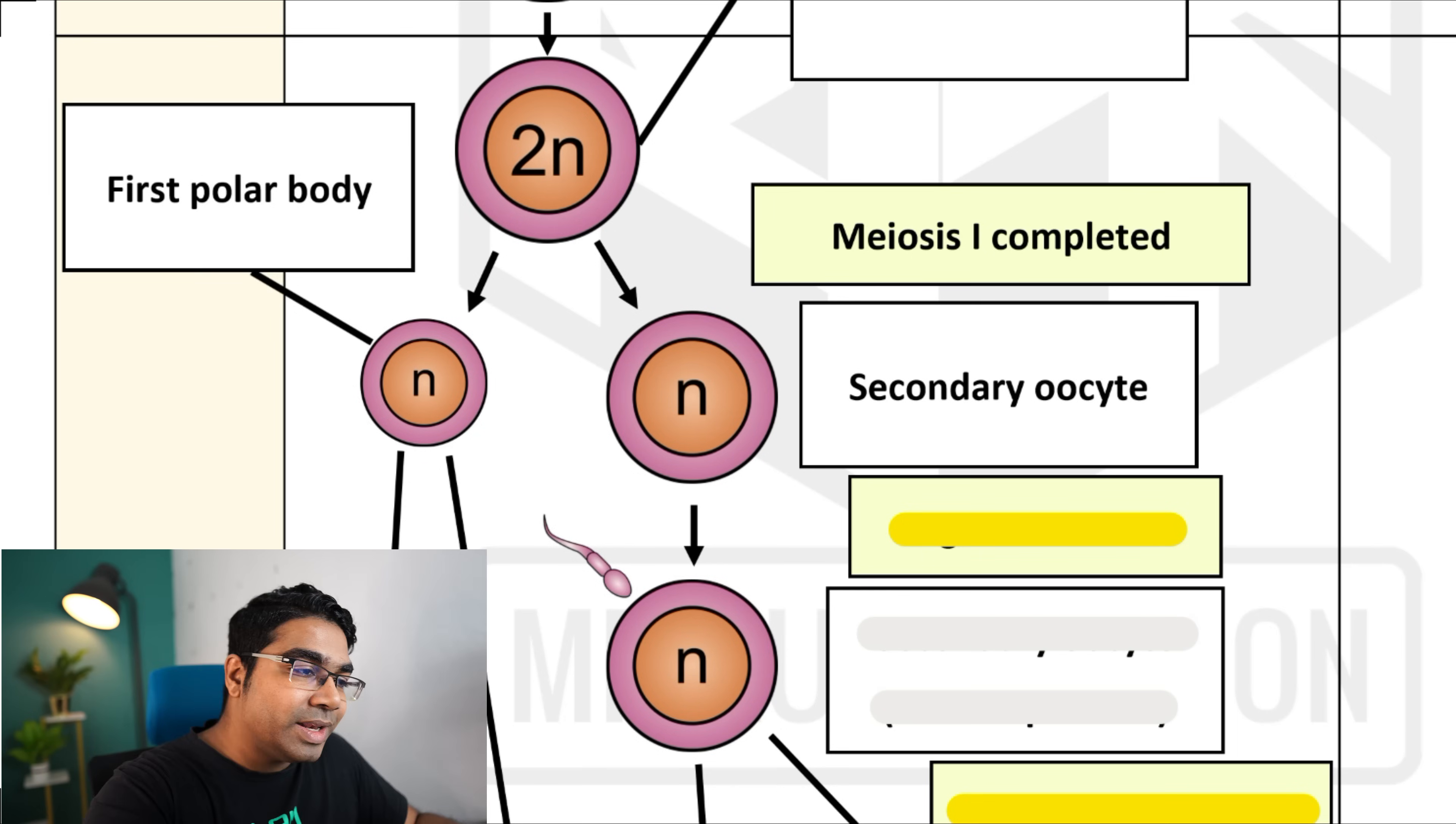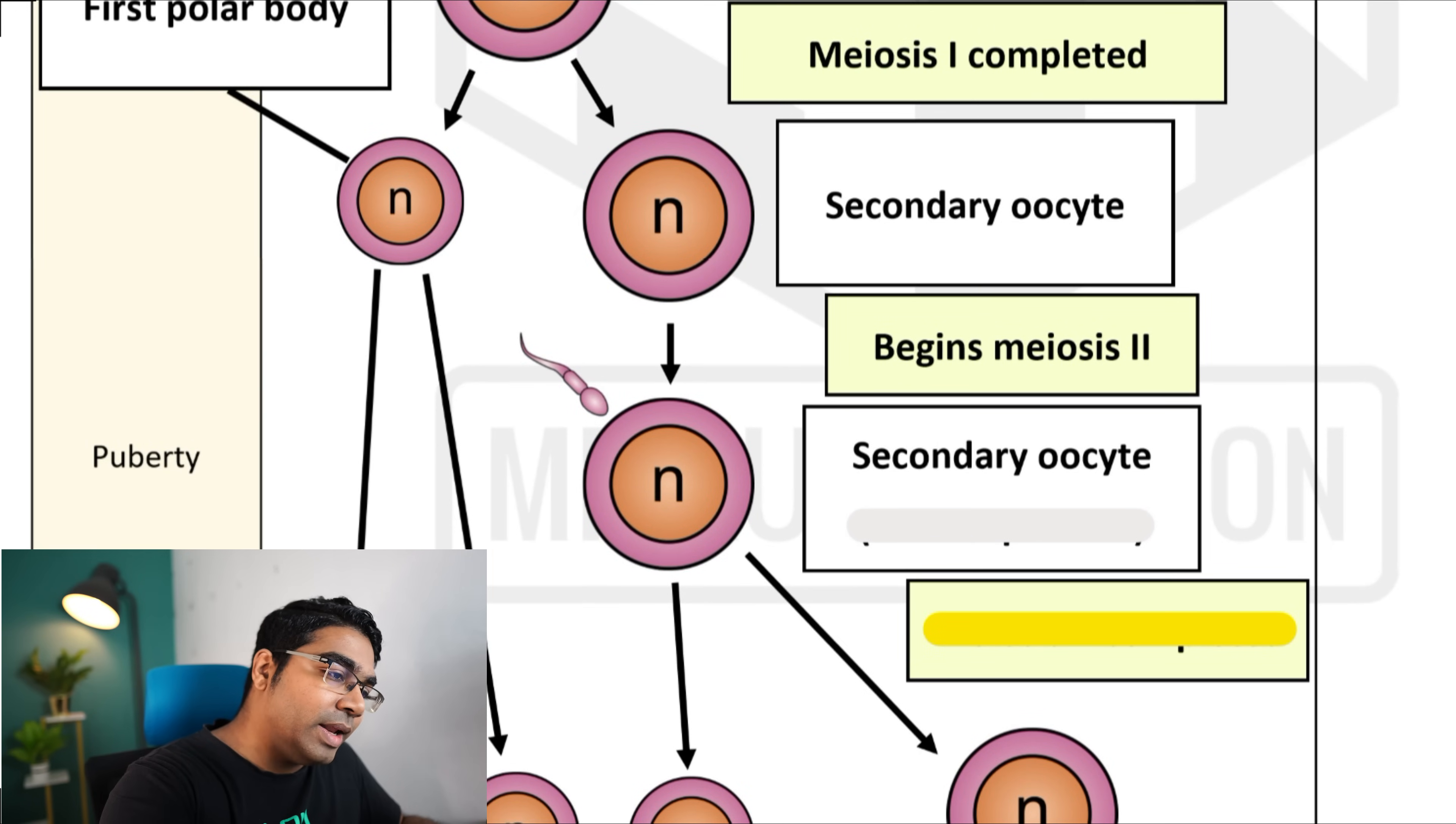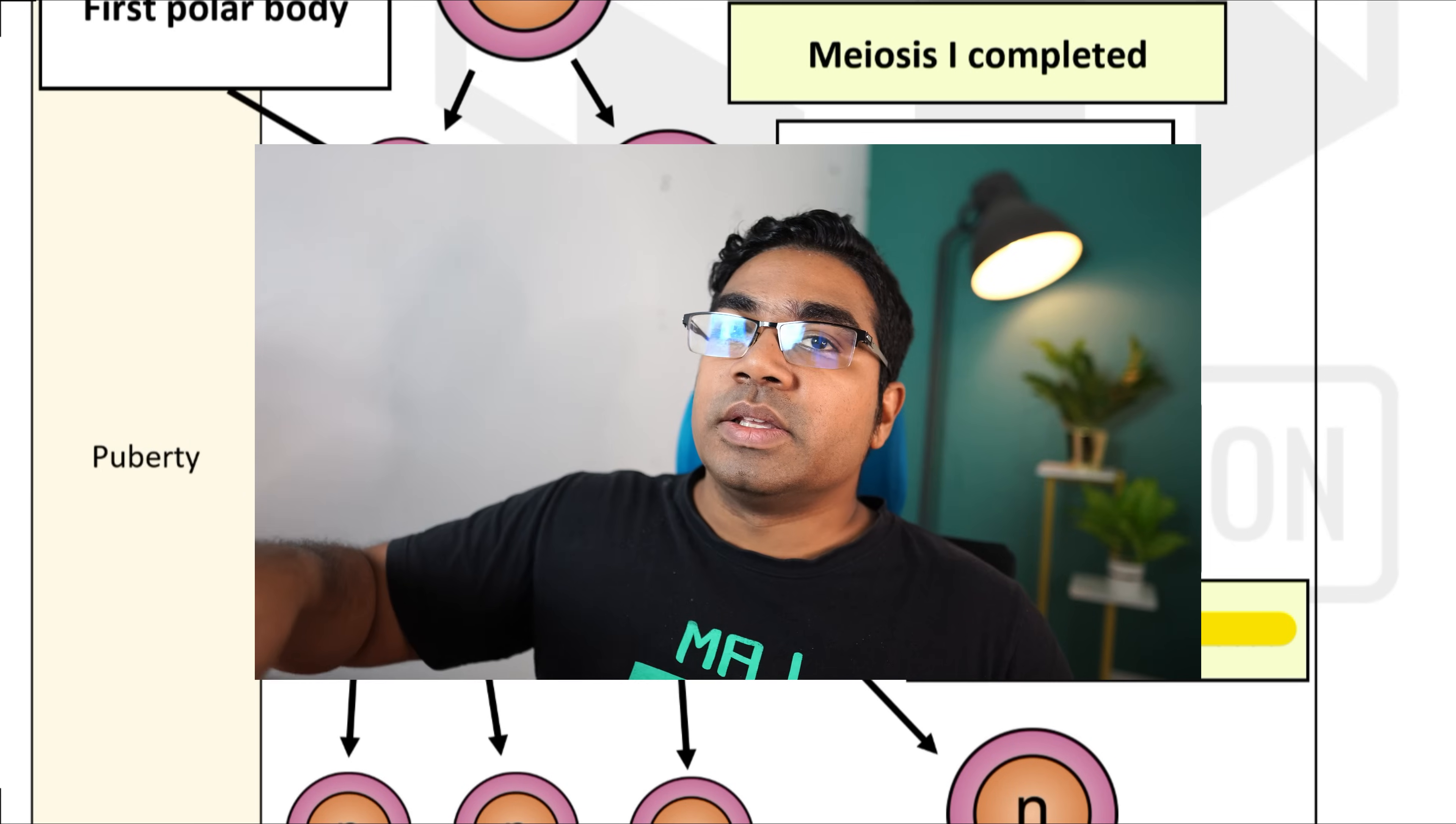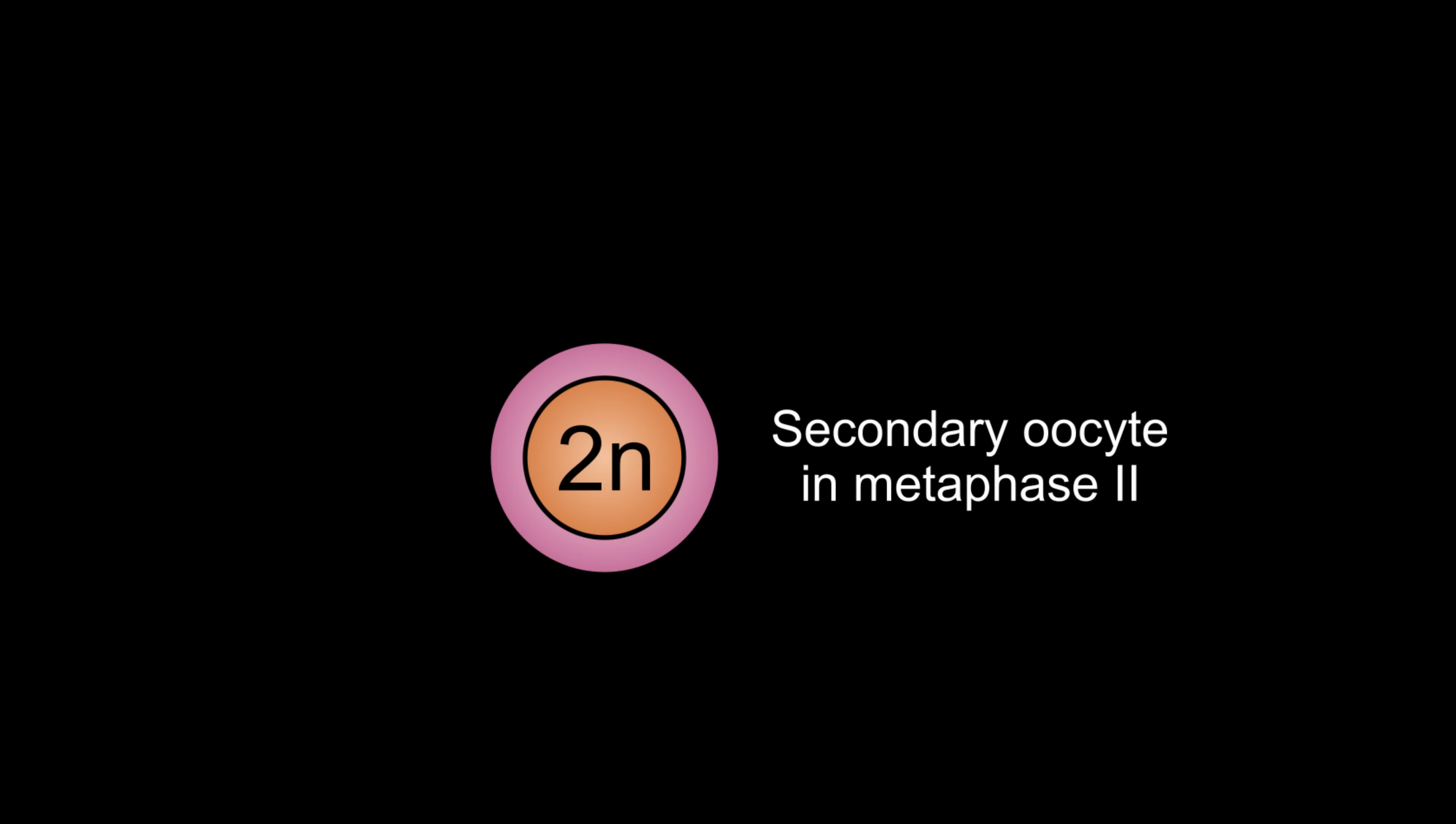The secondary oocyte will begin meiosis 2. However, once again, meiosis 2 is not completed. And so what we get is a secondary oocyte that is stalled once again at metaphase 2. This secondary oocyte is what is released during ovulation. The secondary oocyte is going to remain at the metaphase 2 stage until a sperm penetrates the secondary oocyte.